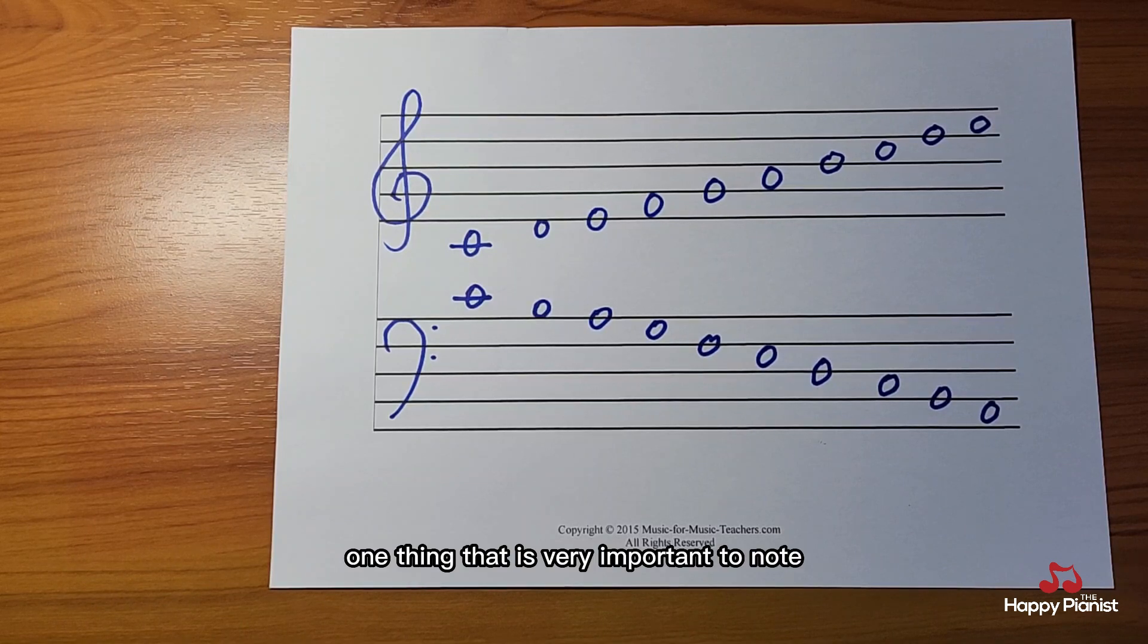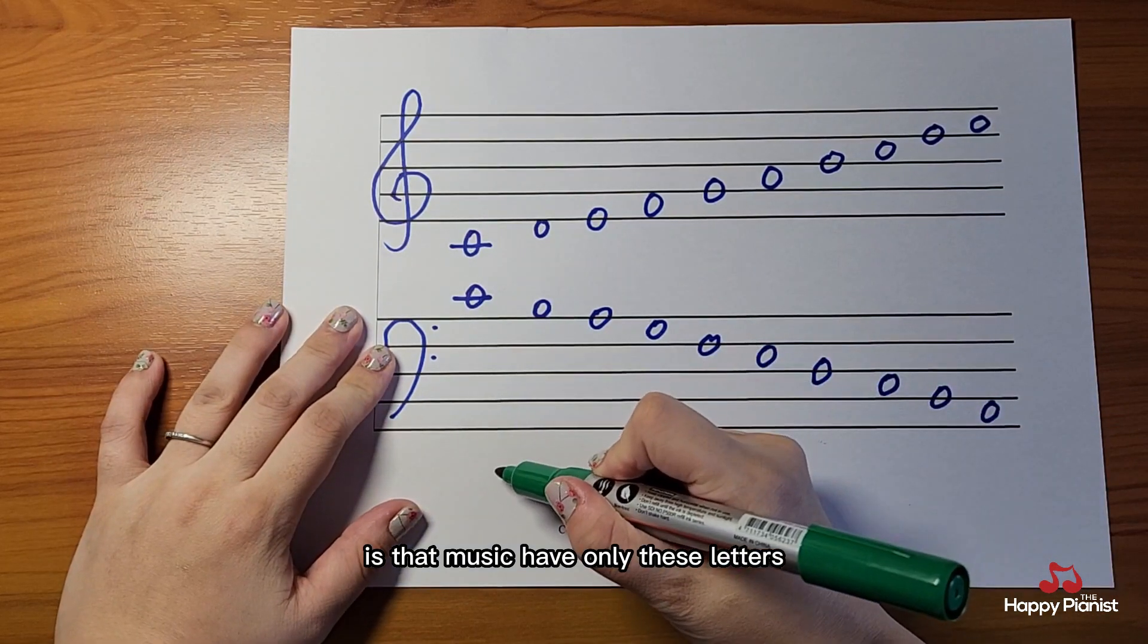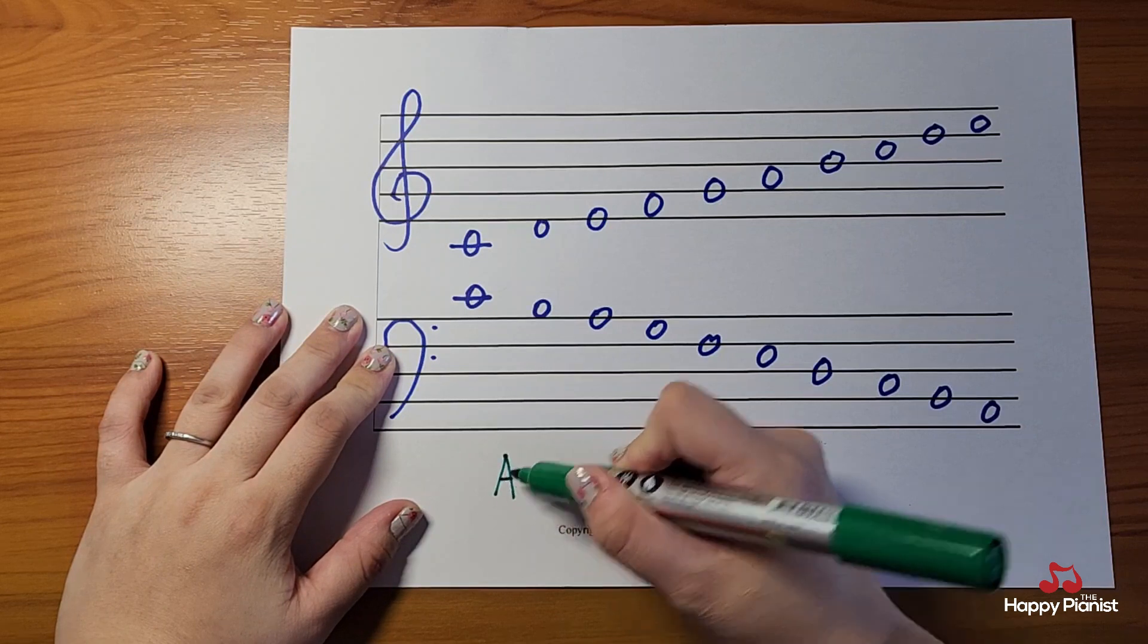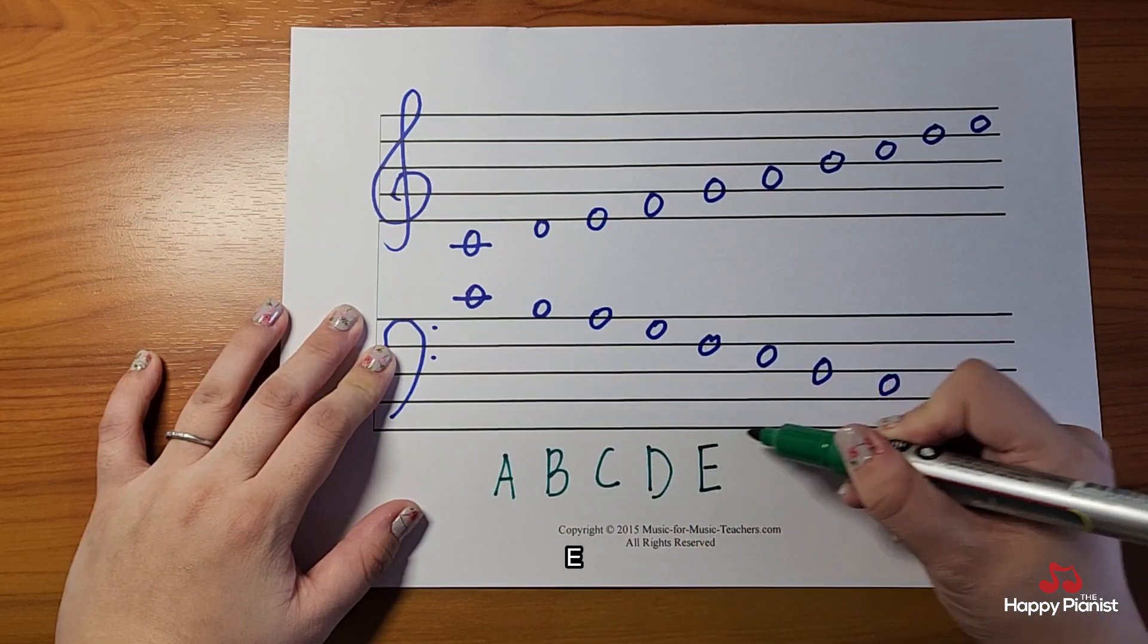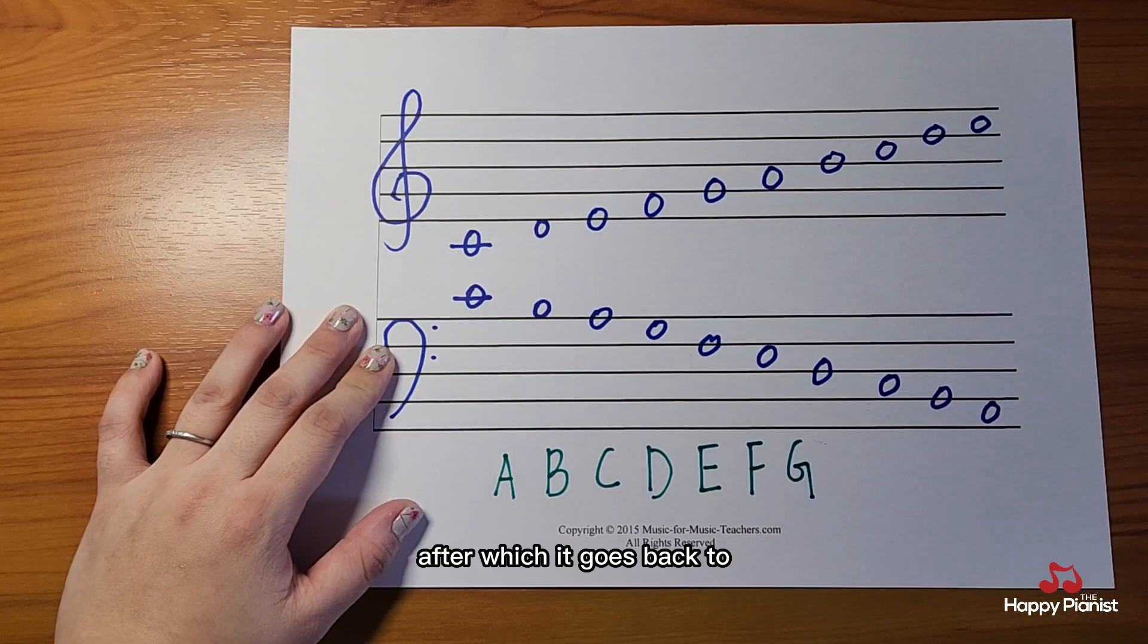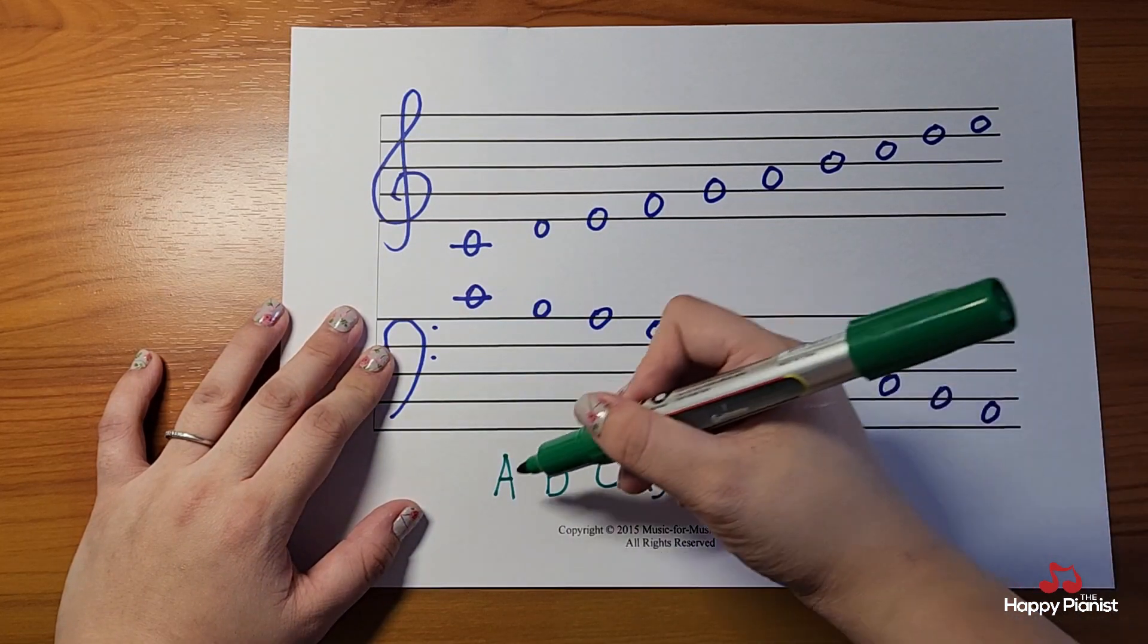One thing that is very important to note is that music have only these letters: A, B, C, D, E, F, G. After which, it goes back to A.